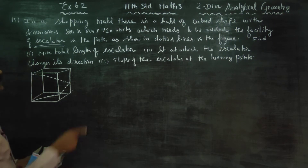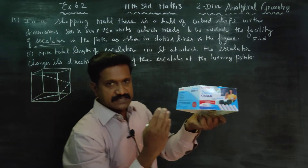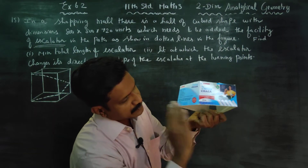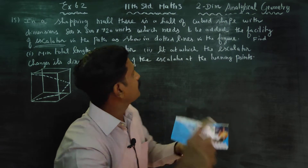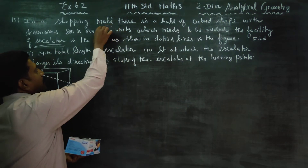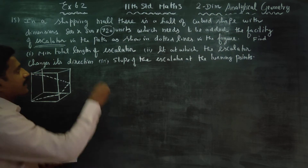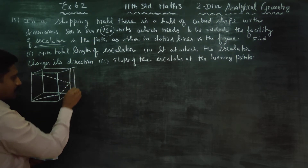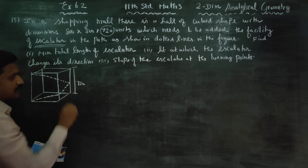If you look at the measurements: 800×800 — the base length and breadth is 800. The height of the building is 720.